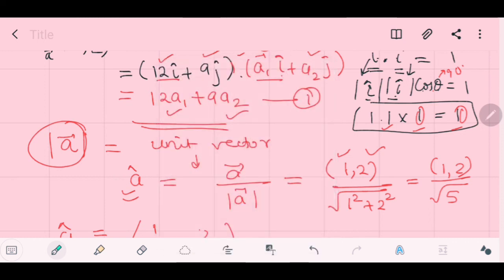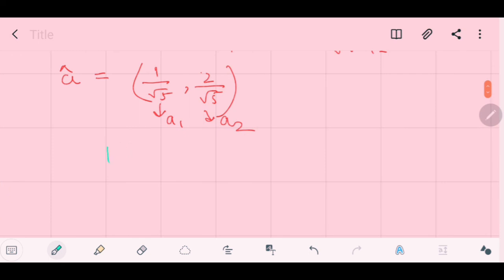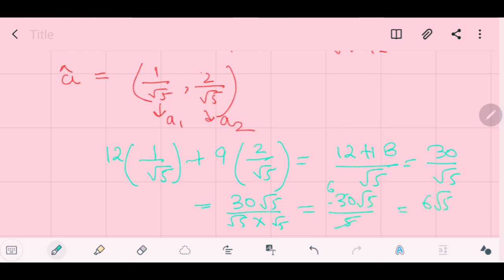Now, substitute this in equation 1. That means it would become 12a₁ plus 9a₂. So, 12a₁ plus 9a₂. That means 12 times 1, 12. 9 times 2, 18. 12 plus 18 and √5 is same denominator. 30/√5. And you can rationalize it by multiplying with √5 and multiply and divide by √5. So, 30√5 by, multiply this 5. 5, 6√5. You have got this.